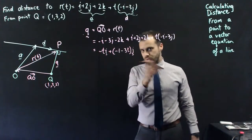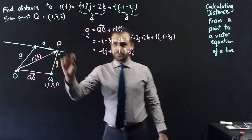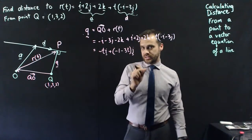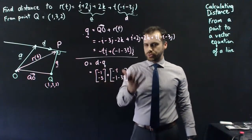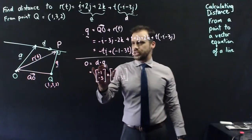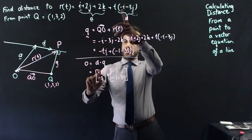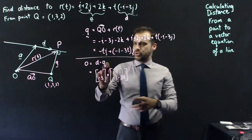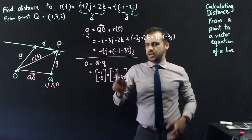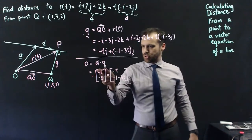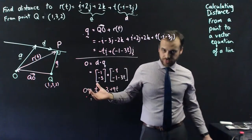Now I can use a similar procedure to the previous example: a dot product of q and d, because they need to be perpendicular, must equal zero. I don't want to confuse you, but I want to expose you to an alternative notation. Zero equals d dot q, where d is (negative 1, negative 3) dotted with q which is (negative t, negative 1 minus 3t). I do my dot product by multiplying component by component and adding, then simplify and solve for t.